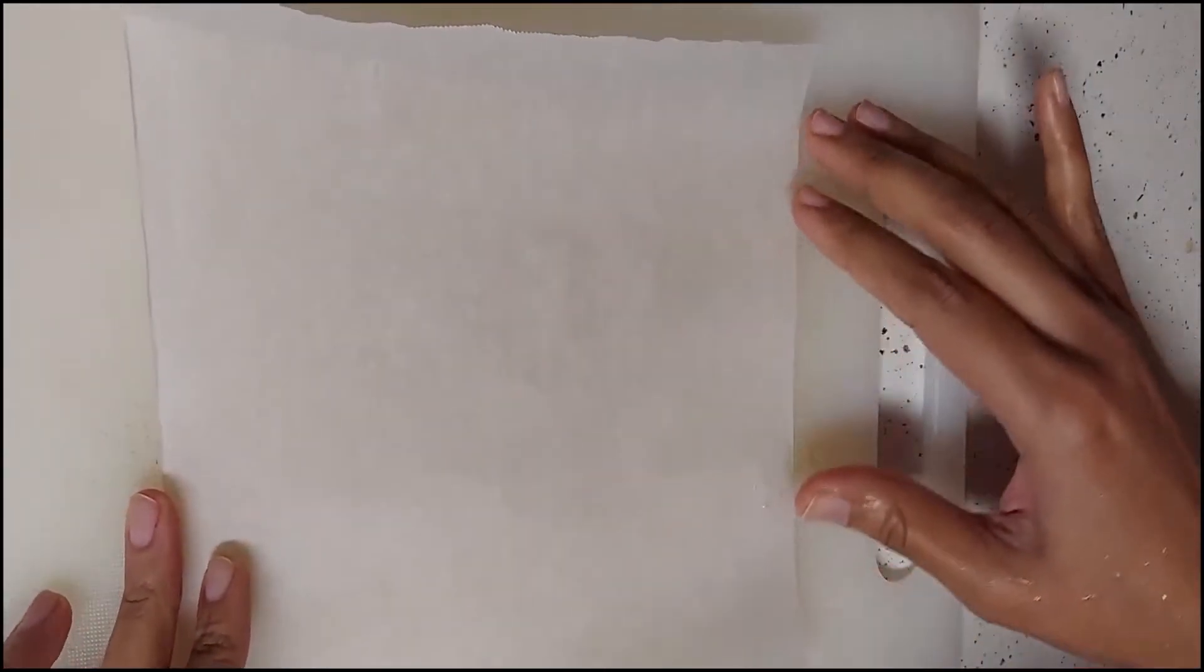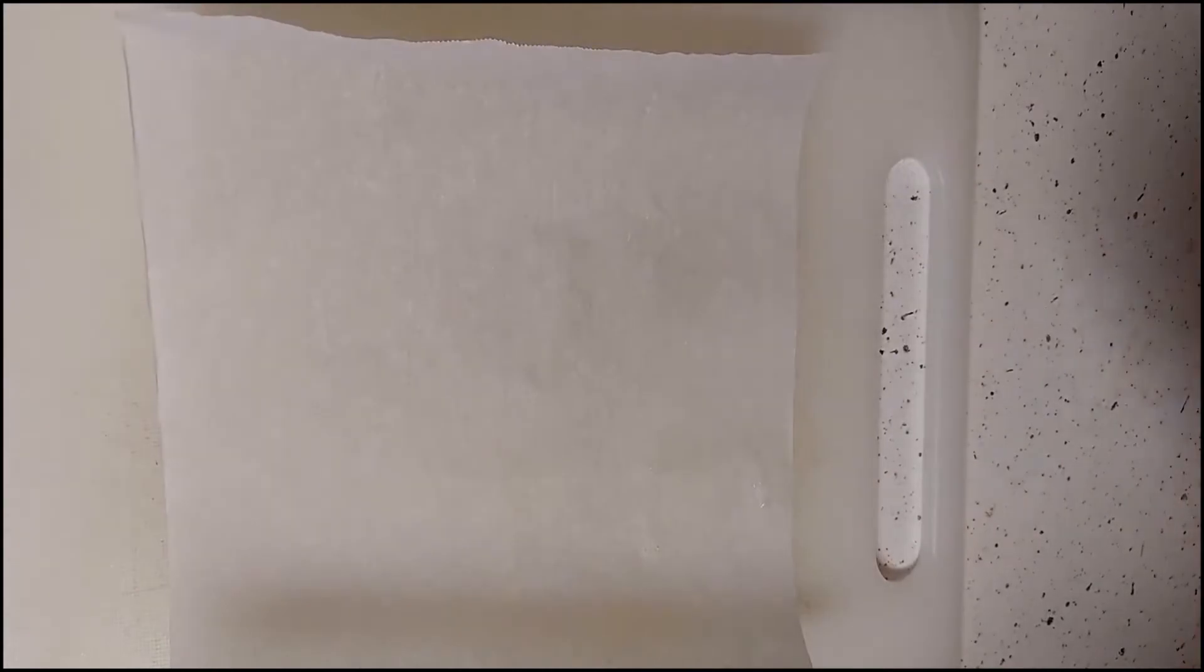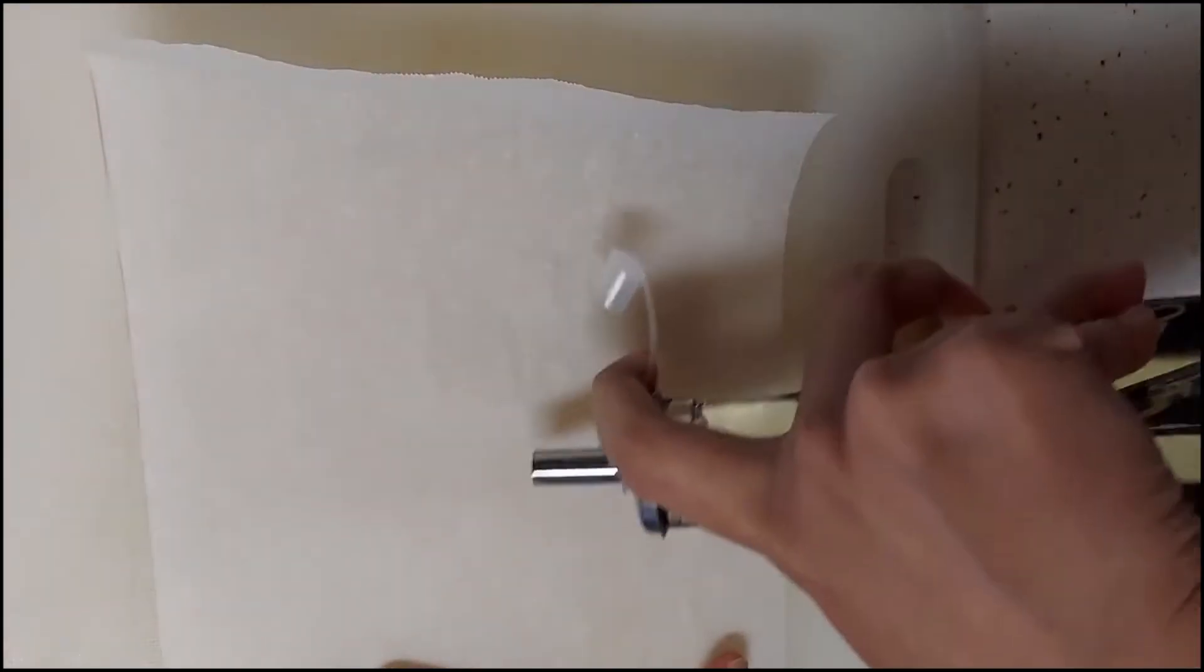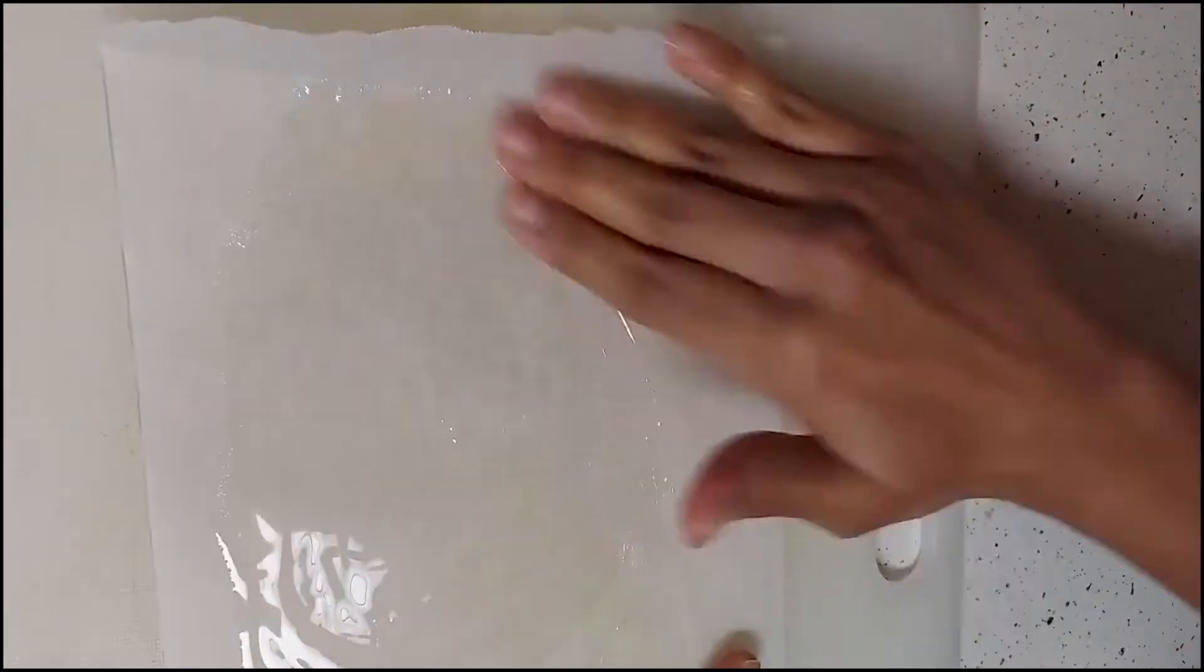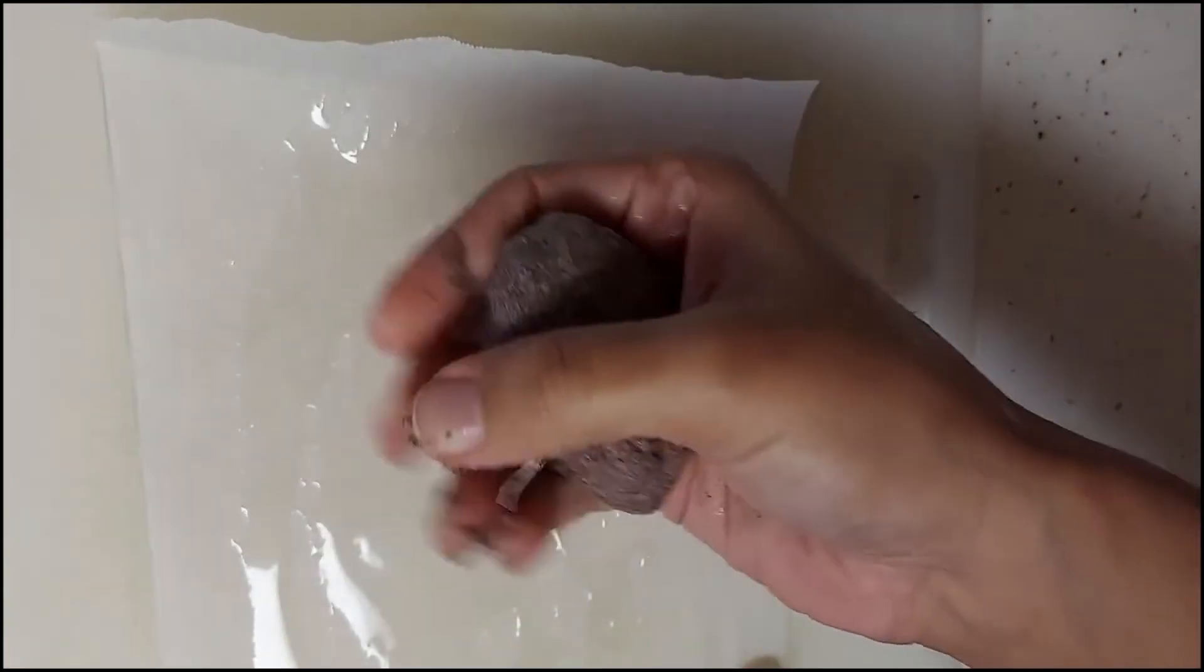I am using parchment paper for rolling the dough. You can also use a wet kerchief or a wet piece of cloth. Since I am using parchment paper, I am applying some drops of oil. If you are using a wet kerchief, then you need not apply the oil. Now take a small ball of the dough.